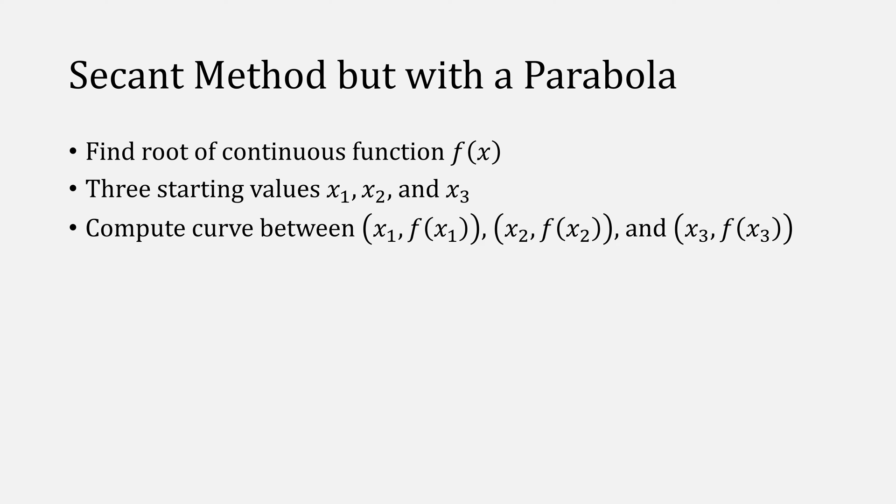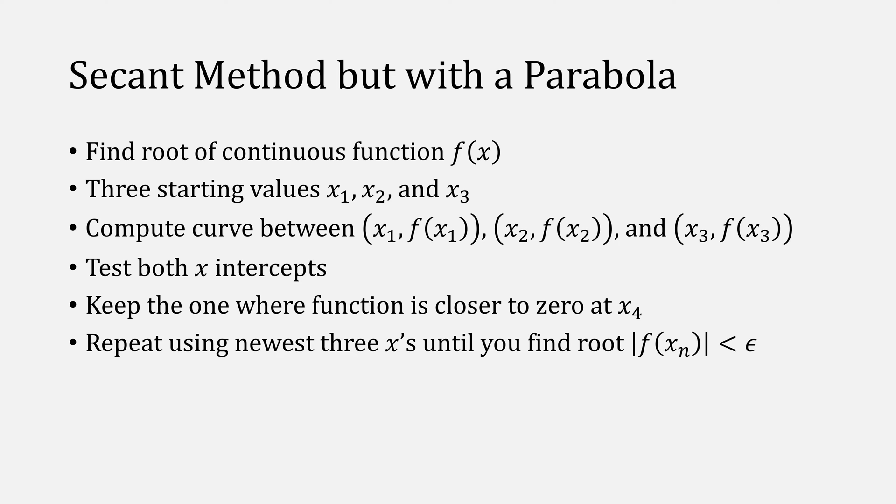Muller's method you can imagine as a secant method, but with a parabola instead of a secant. We want to find the root of a continuous function f, and we use three points, x1, x2, and x3. We use those to compute a parabola that goes between those points, and then we test the x-intercepts of that parabola. Once we have tested both of them, we keep the better one and repeat with the last three x's. More on this later.